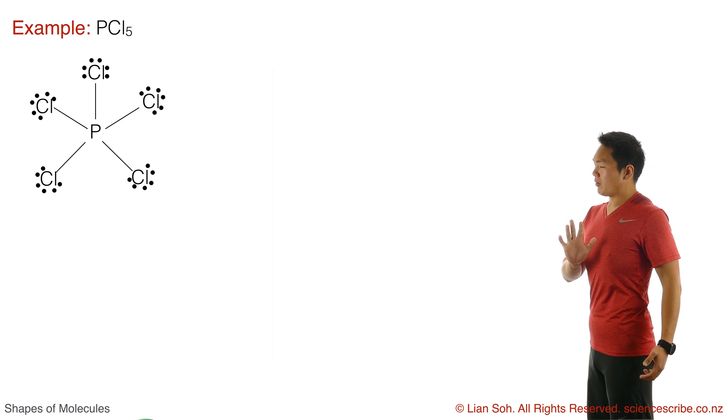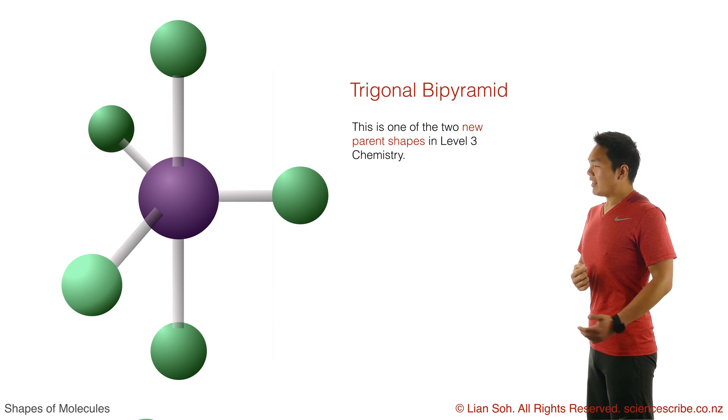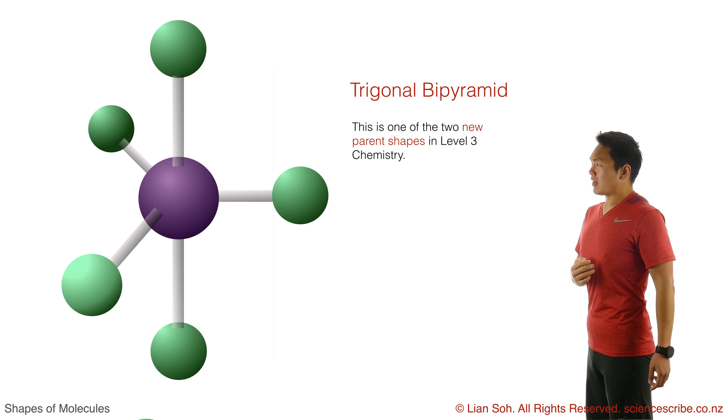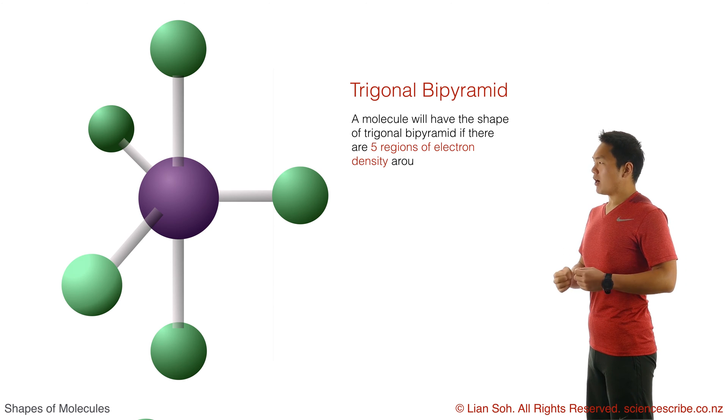When that happens, you know that your parent shape will be trigonal bipyramid. Let's say all those regions are bonding regions of electron density. This means your shape is trigonal bipyramid. Now why is it called trigonal bipyramid?